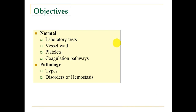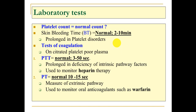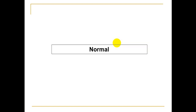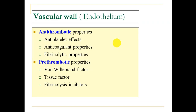Regarding blood vessels and platelets, the laboratory tests essential for assessment of bleeding disorders depend on bleeding time, which depends on platelet count. We also need tests for coagulation like PT and PTT, which give us an idea about clotting factors, all of which are synthesized by the liver.